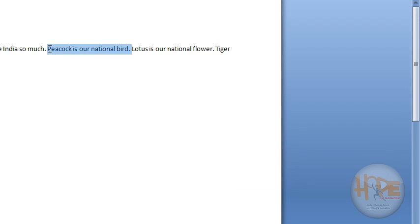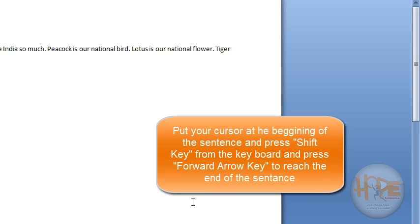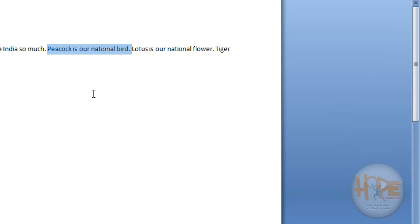You can also use the Shift key — place the cursor at the beginning of your selection, press the Shift key on your keyboard, and by moving the arrow keys you can select a segment of the sentence or the entire sentence you want to select. So our text is selected now.